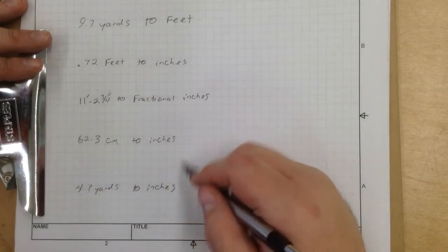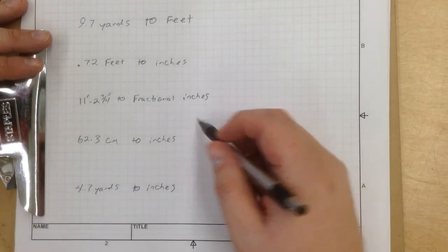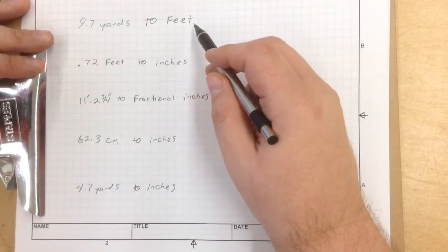We're going to figure out each one of these, and I'm going to show you how to do the math. So first, let's start with this one, 9.7 yards to feet.